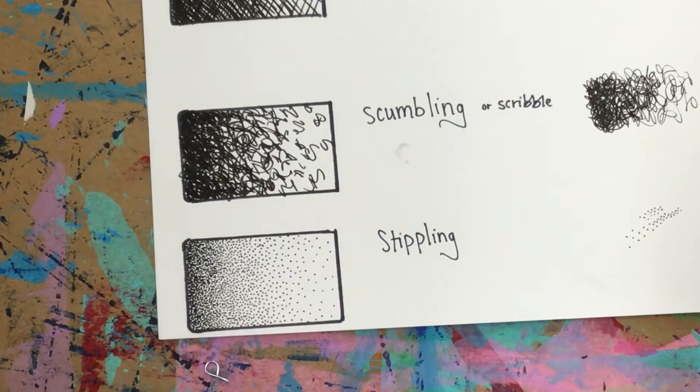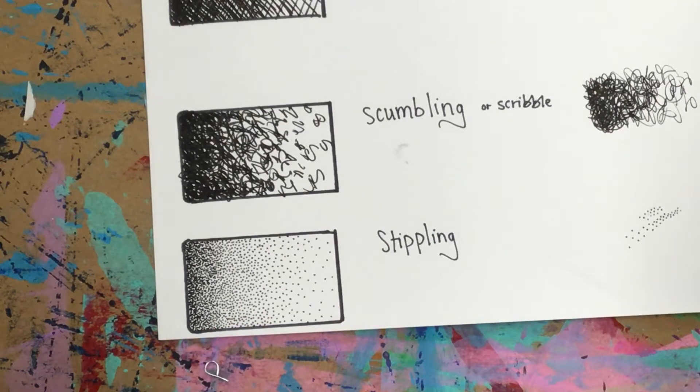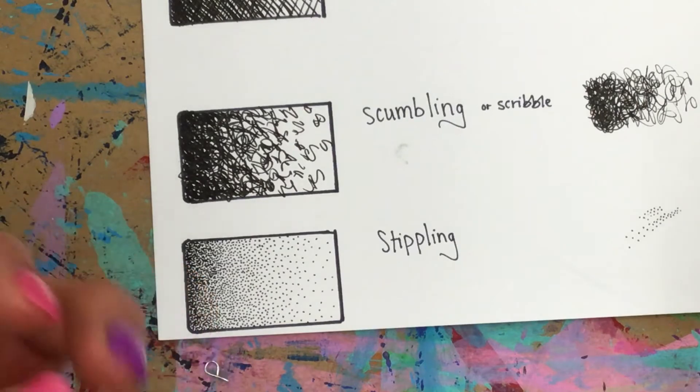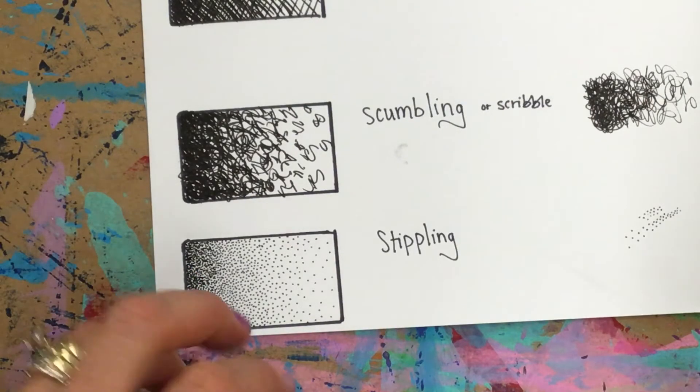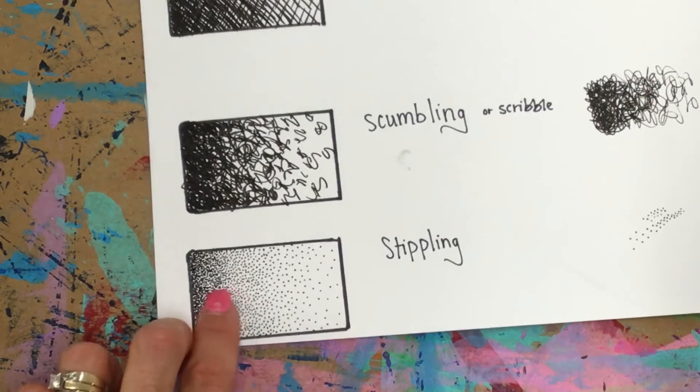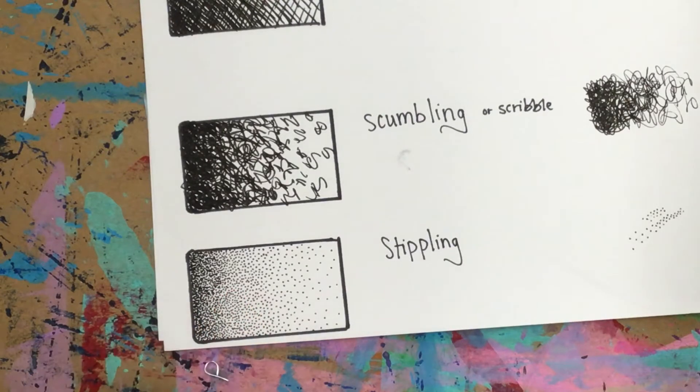You want to place them, you don't want to do it really quickly because if you do it quickly you get the little, it almost looks like a comma instead of a dot. Try to keep them next to each other instead of piled on top of each other.